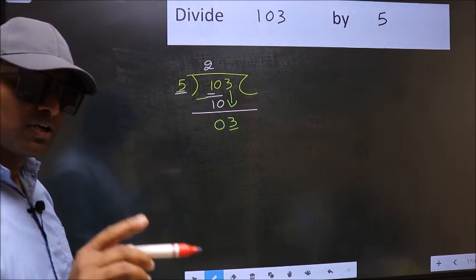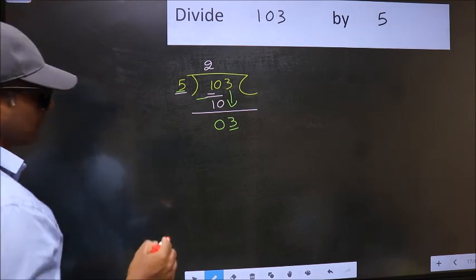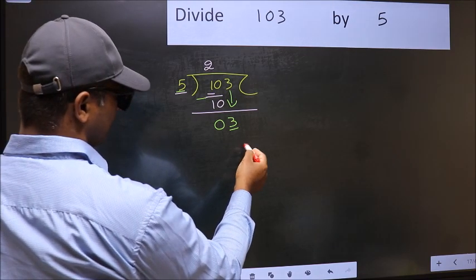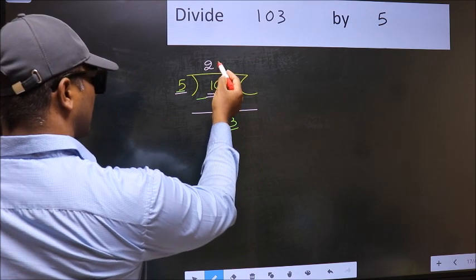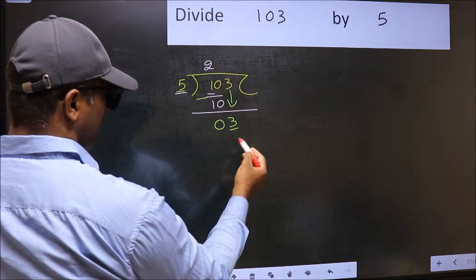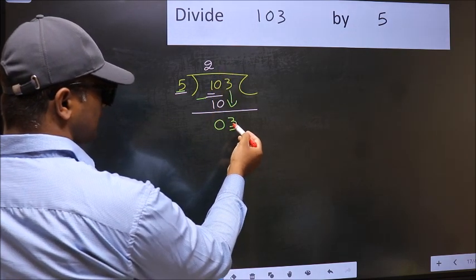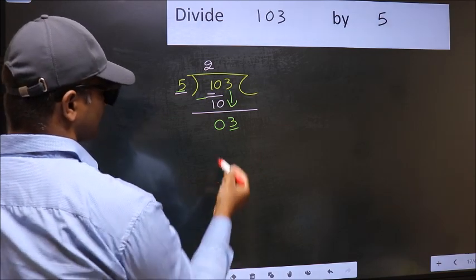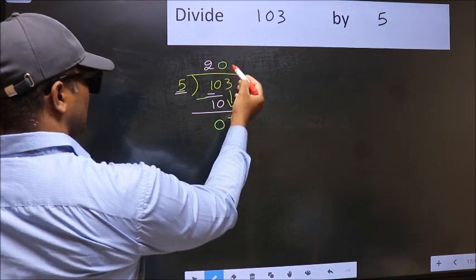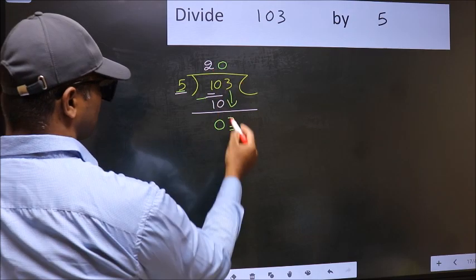Instead, what you should think of doing is, what number should we write here? If I take 1 here, I will get 5. But 5 is larger than 3. So what we should do is, we should take 0. So 5 into 0, 0.